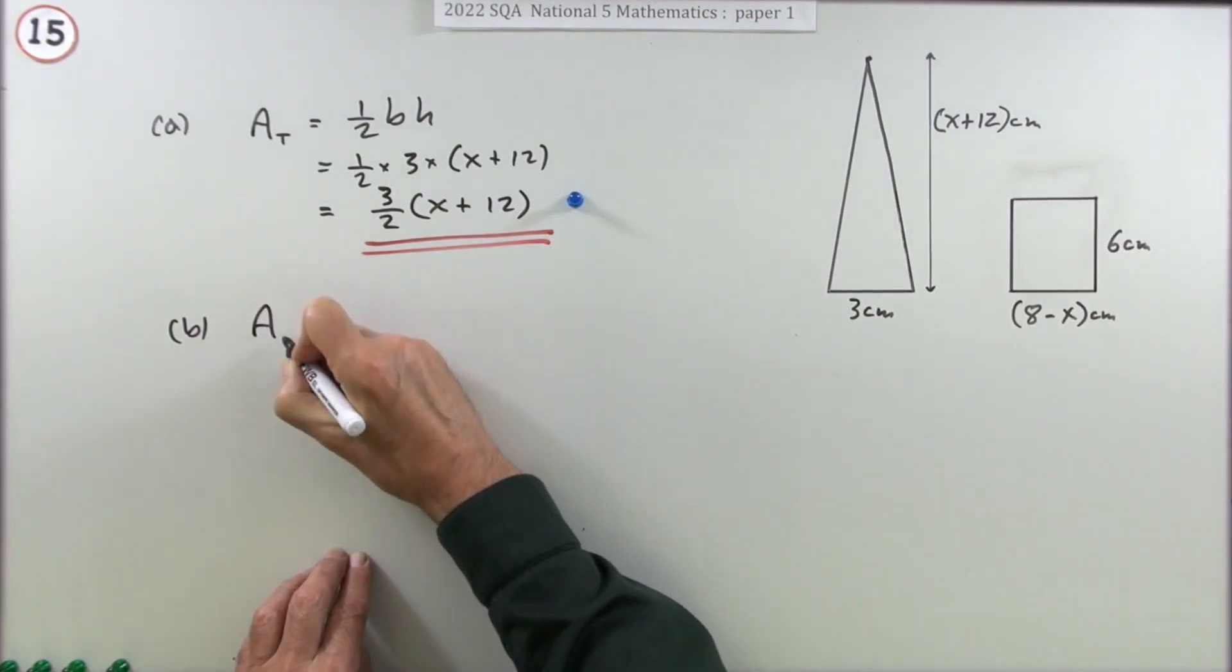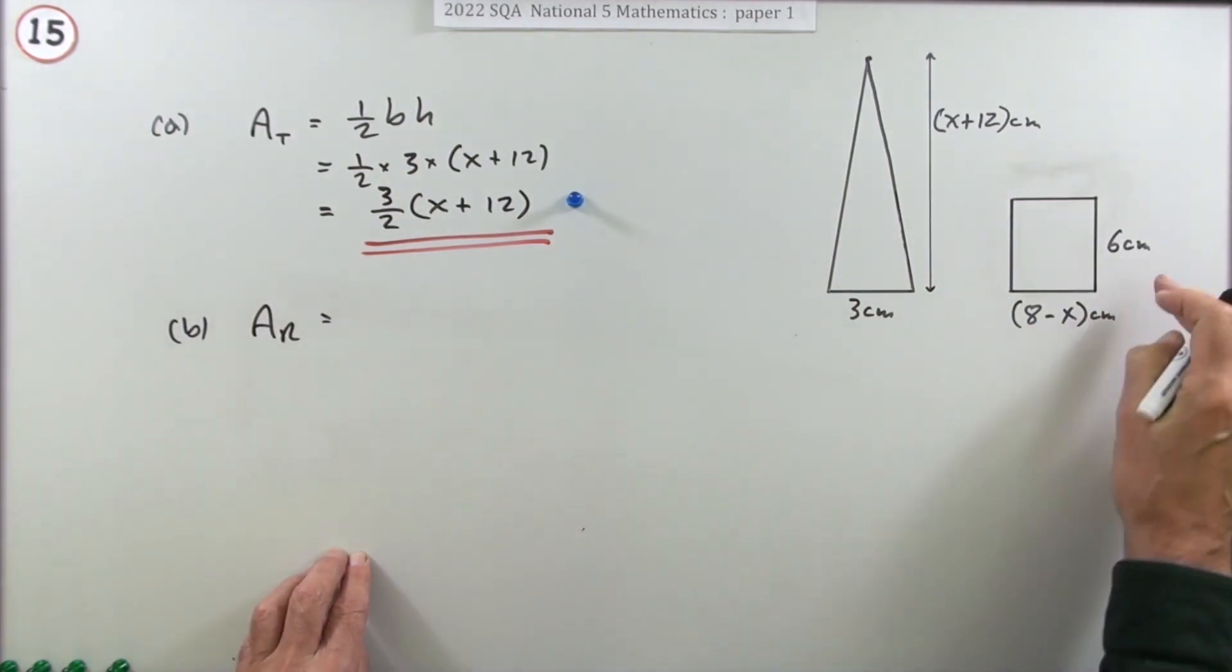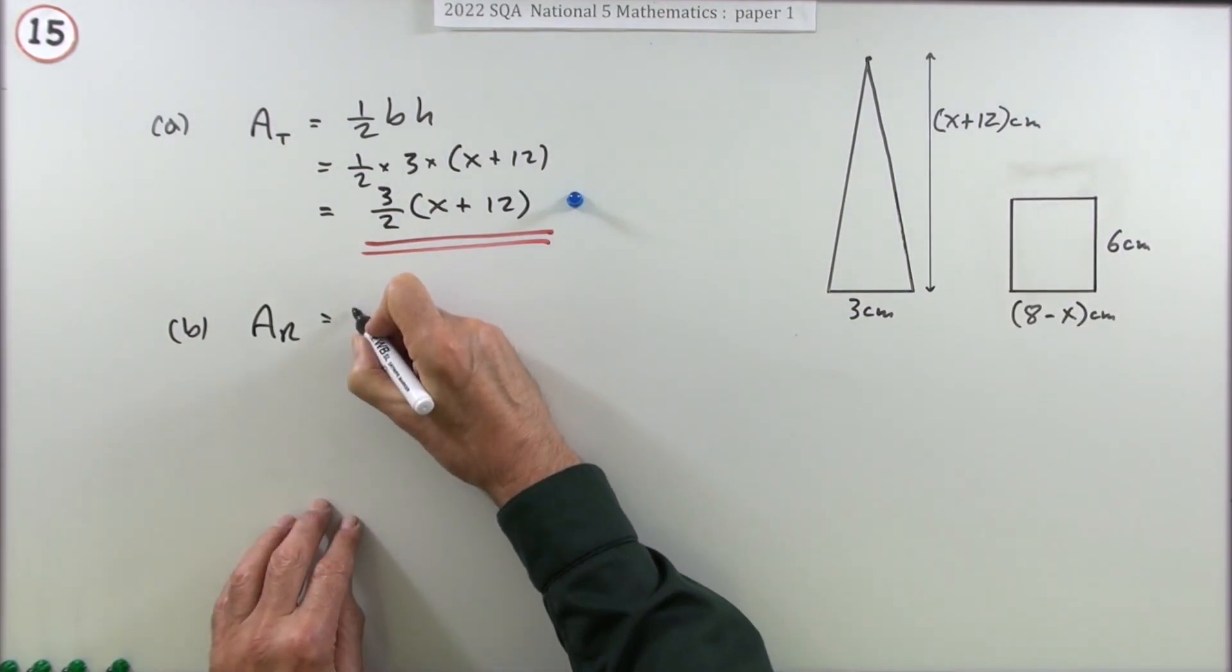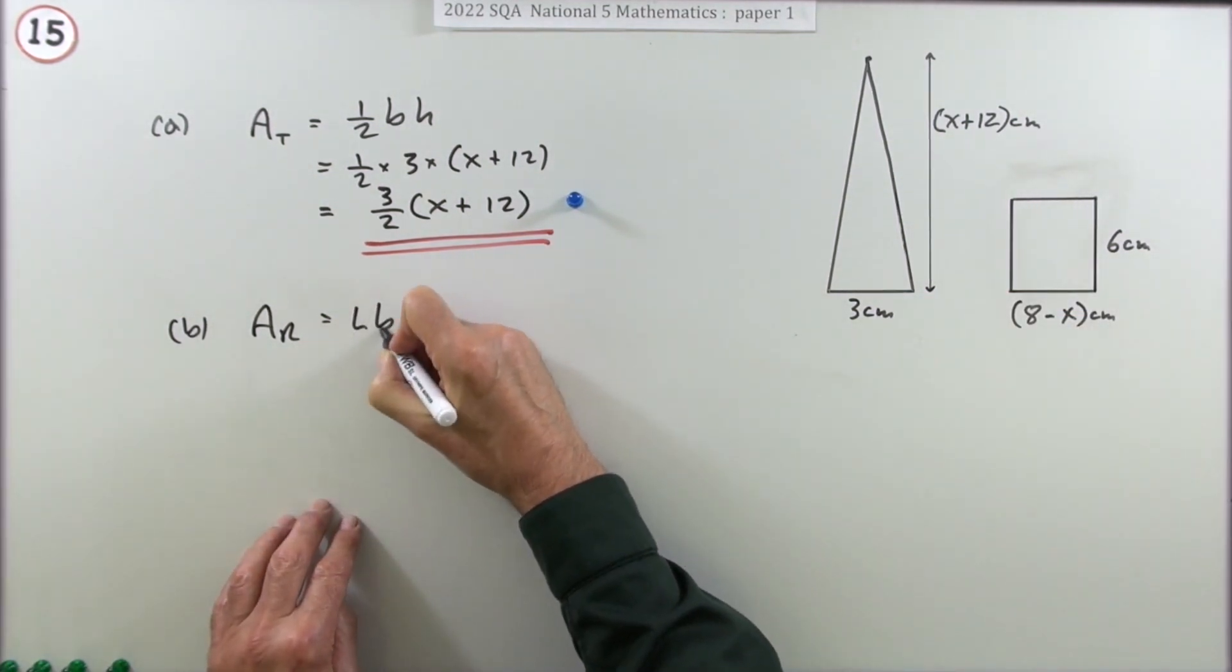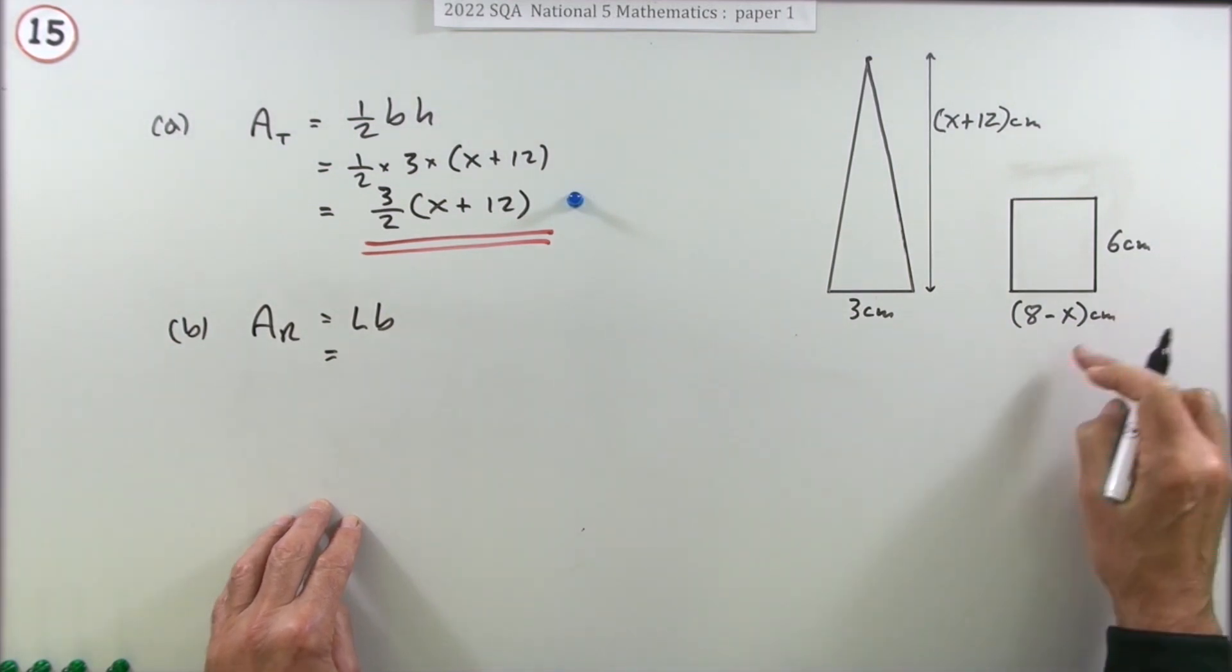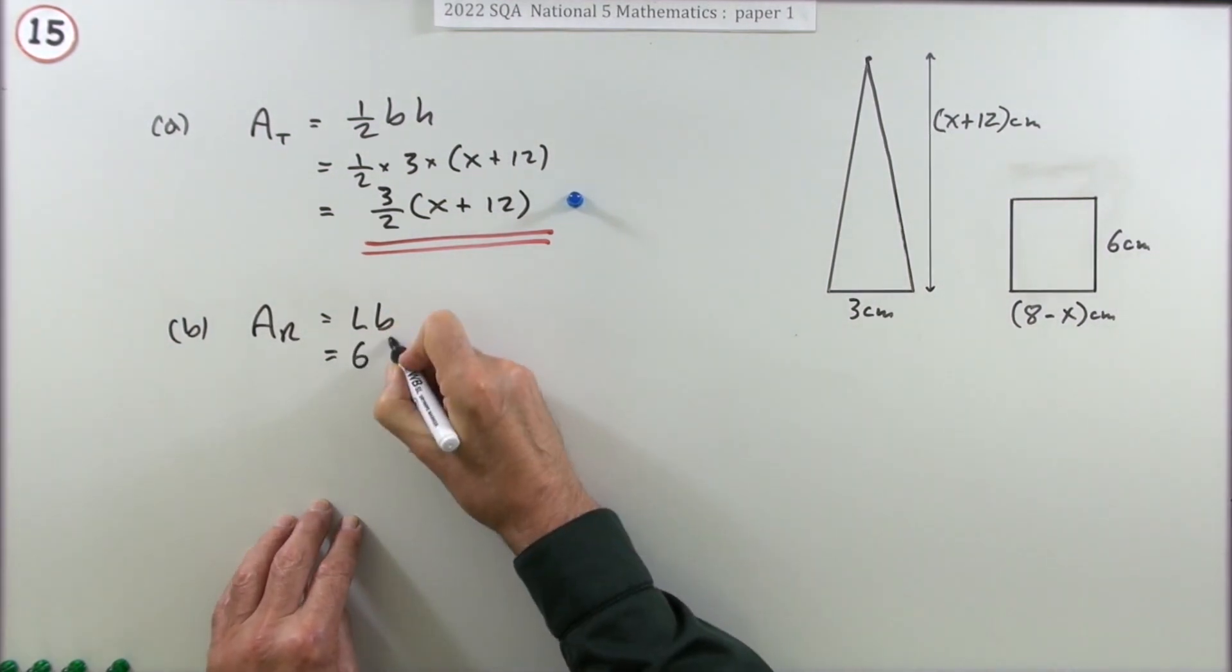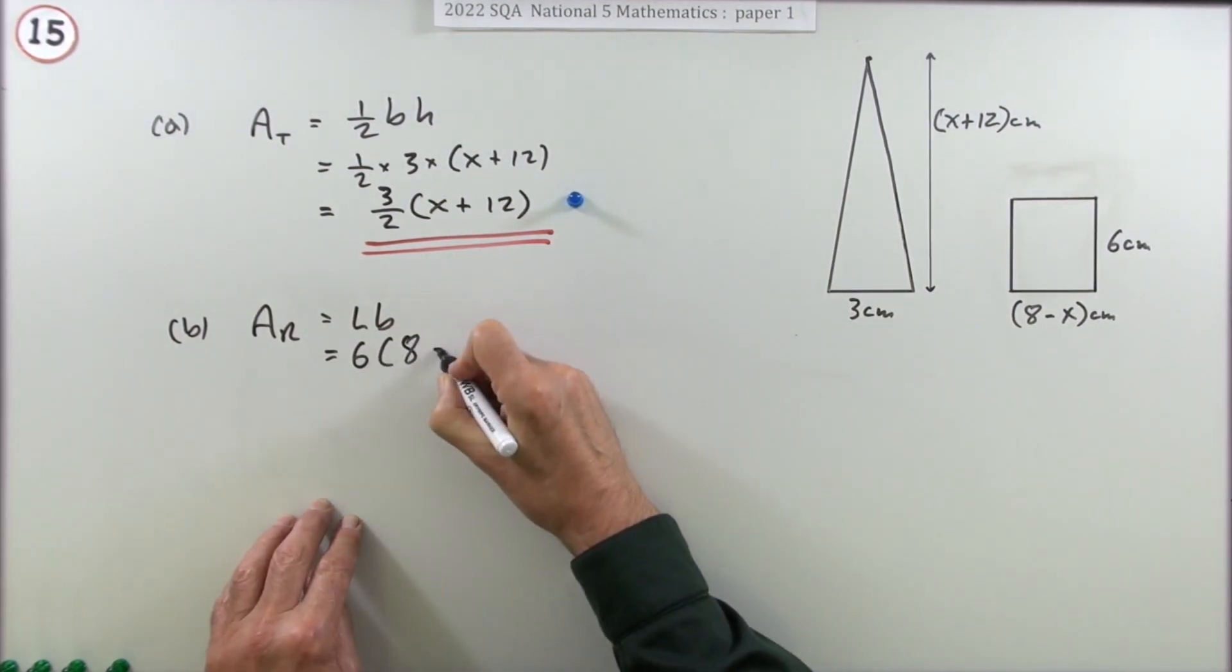For the rectangle, the area of the rectangle will be the length times the breadth. You can put a formula down if you like, length times breadth, base times height, or just go straight in with the numbers: 6 times the dimensions, rather, 8 minus x.